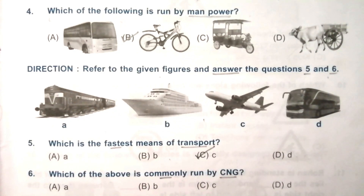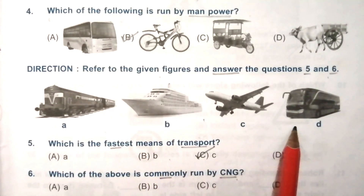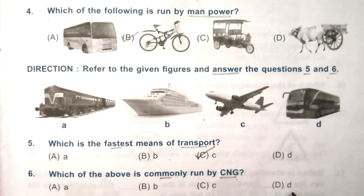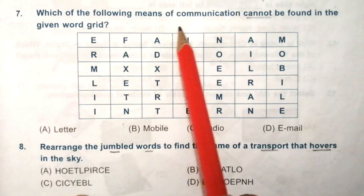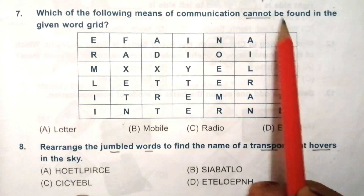Question 6: which of the above is commonly run by CNG? CNG means compressed natural gas. Look at the given options and find the answer. The answer is D — bus.